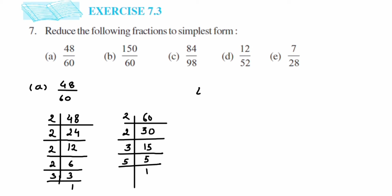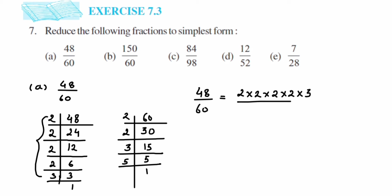Once we have done the prime factorization, we write it down. So 48/60 equals: for 48 we got 2 × 2 × 2 × 2 × 3, and for 60 we got 2 × 2 × 3 × 5. Now cancel out the common factors: cancel one 2, cancel one more 2, cancel one 3. Remaining in the numerator: 2 × 2 = 4, and in the denominator: 5. So the simplest form is 4/5.